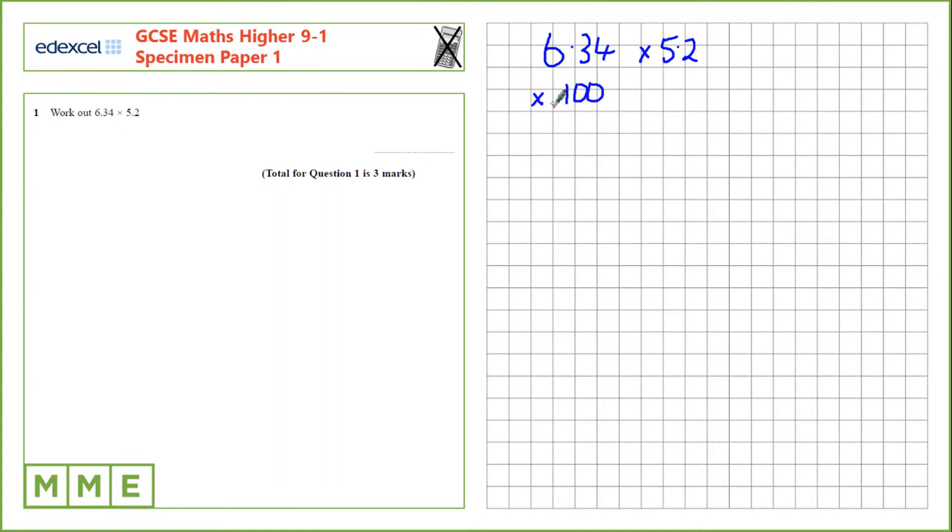Multiply the left hand number by 100 to make it a whole number and the right hand by 10 to make this a whole number. So we're looking at the calculation 634 times 52 and we've multiplied by 1000. At the end of the calculation we'll divide by 1000 so we get our correct value.